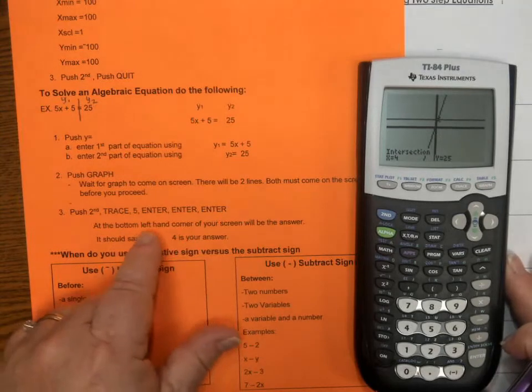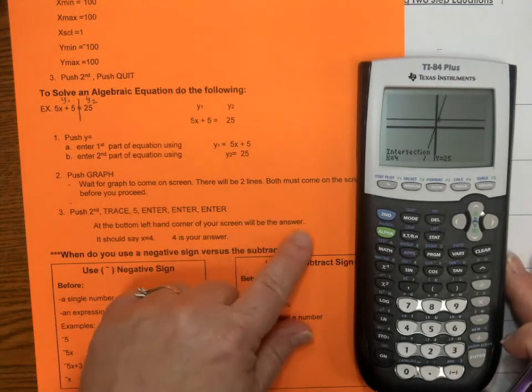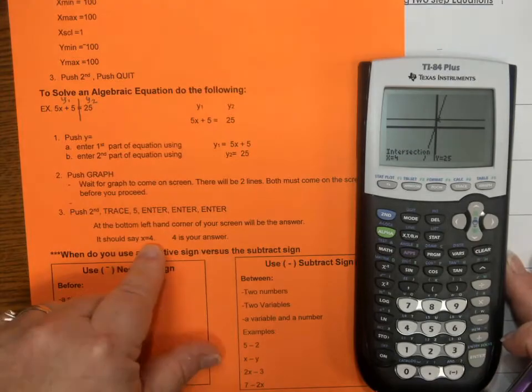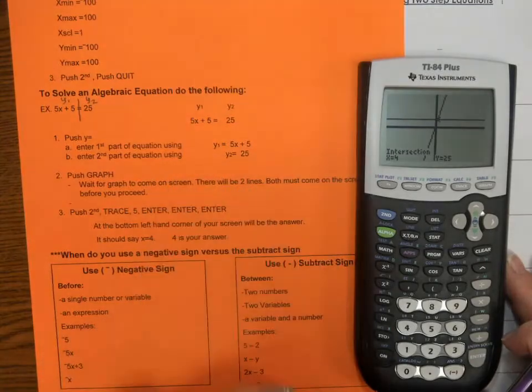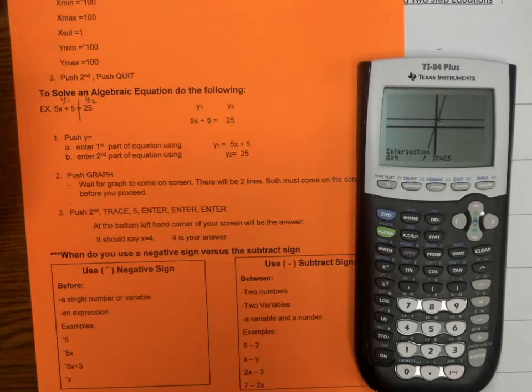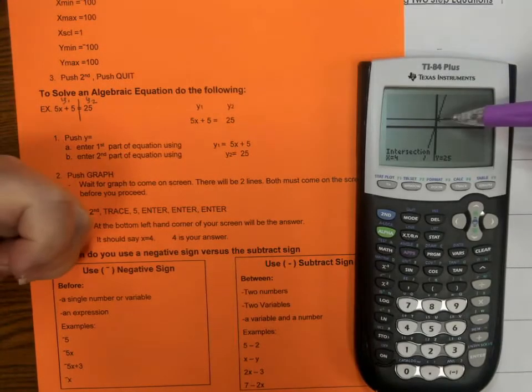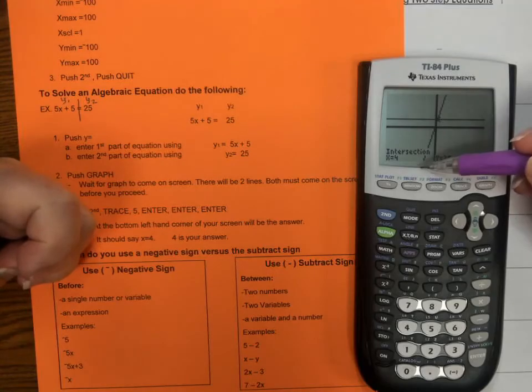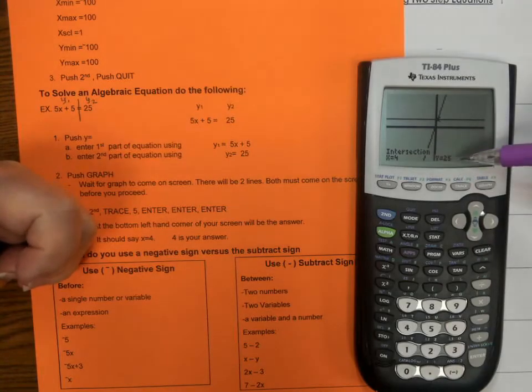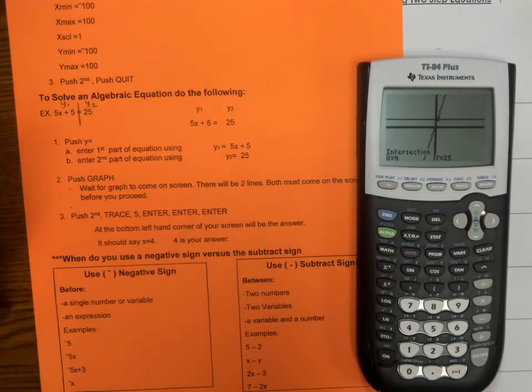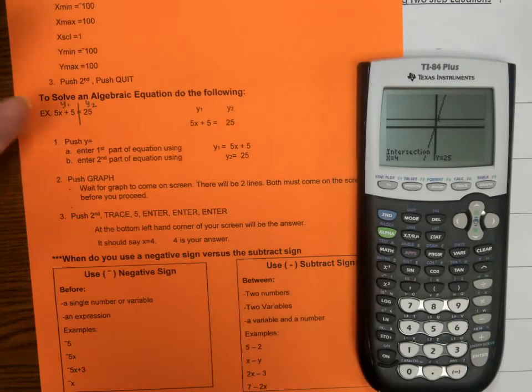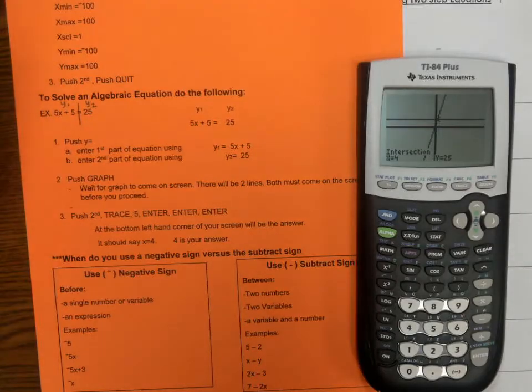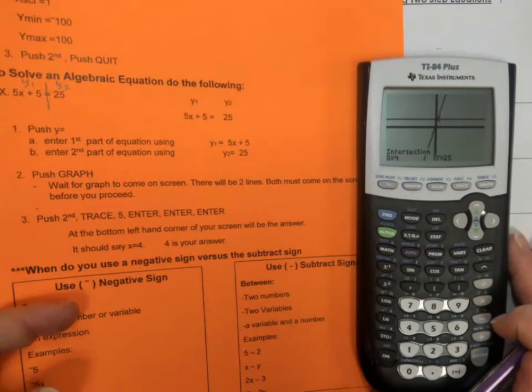So, at the bottom, in the left hand corner, in the screen, you will see your answer. It should say X is equal to 4. And 4 is your answer. If you were going to solve this, you would write your answer as X is equal to 4. The actual point or intersection that those two lines cross at is 4 comma 25. But they're not asking you for the intersection point. When you solve an equation for X, B, M, C, whatever variable they're using, you're trying to figure out how much X equals.